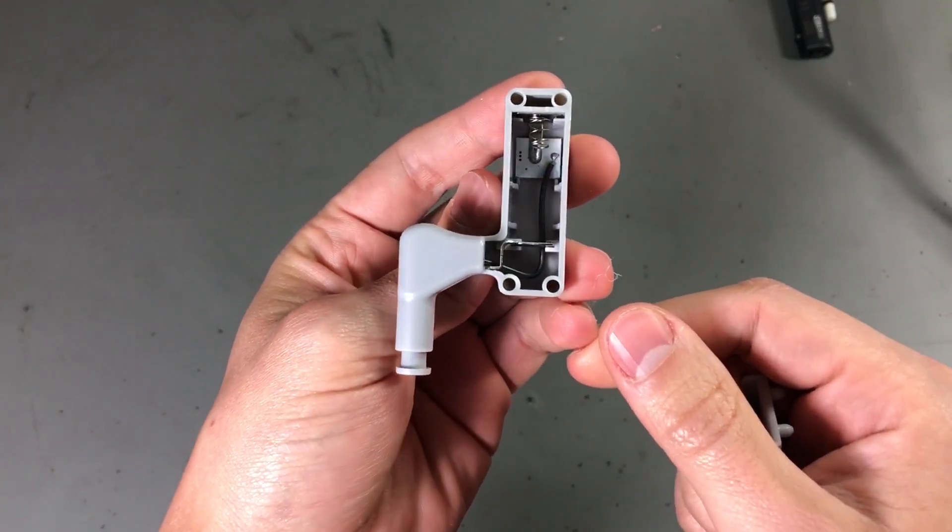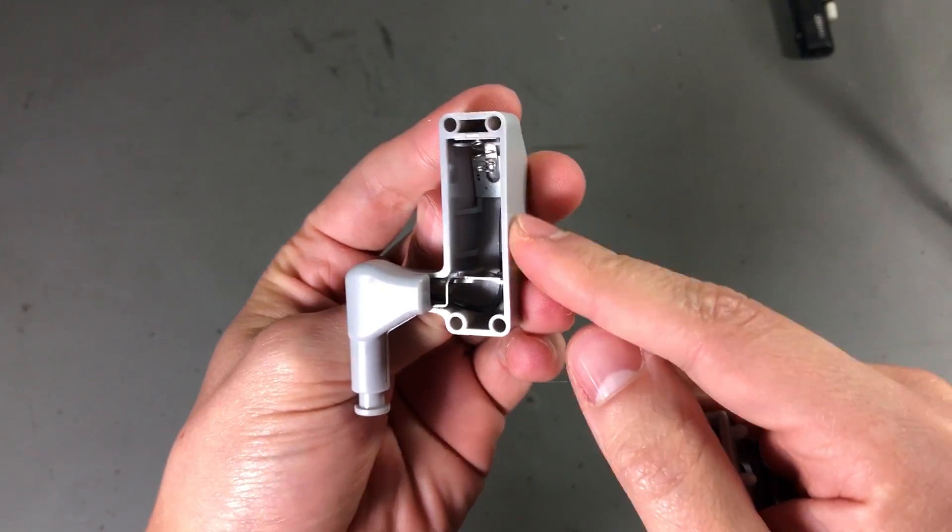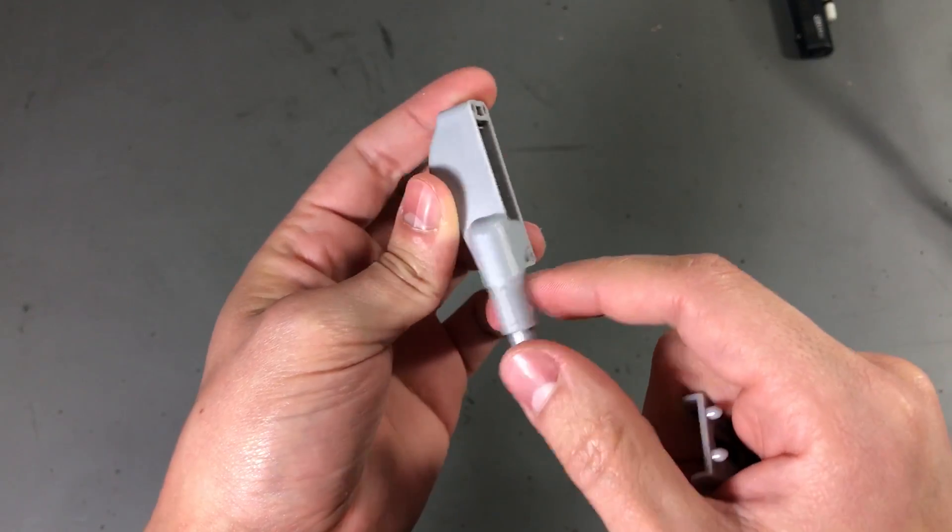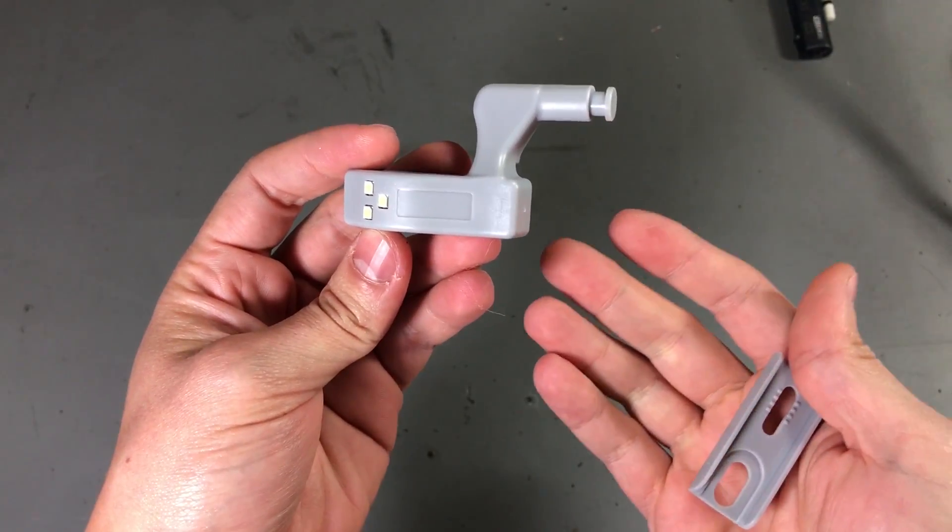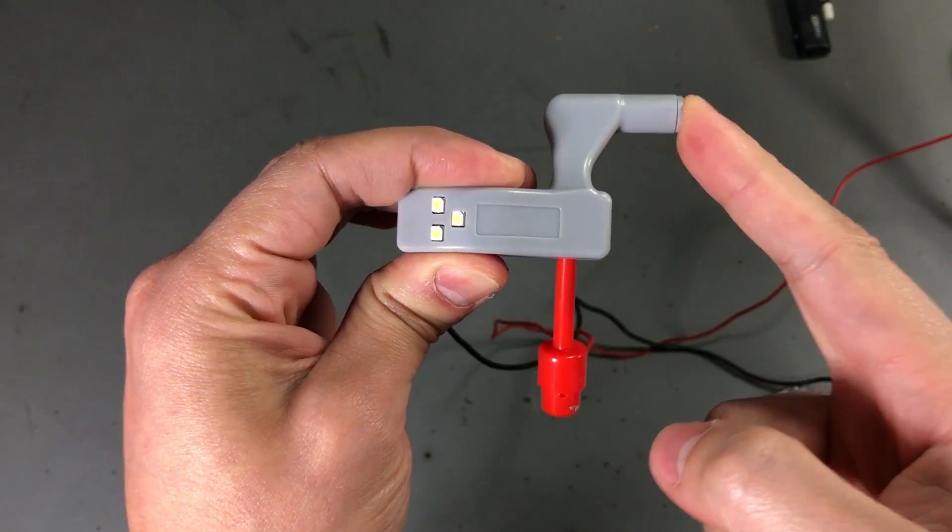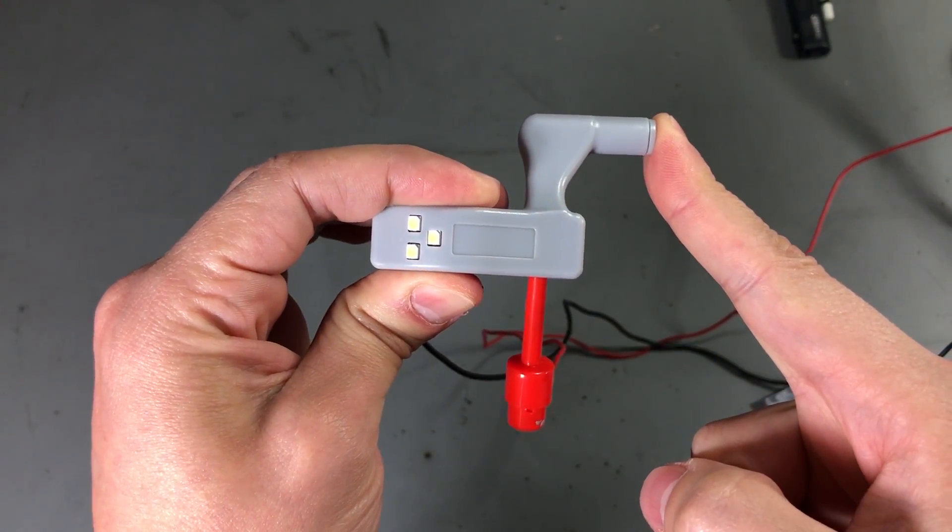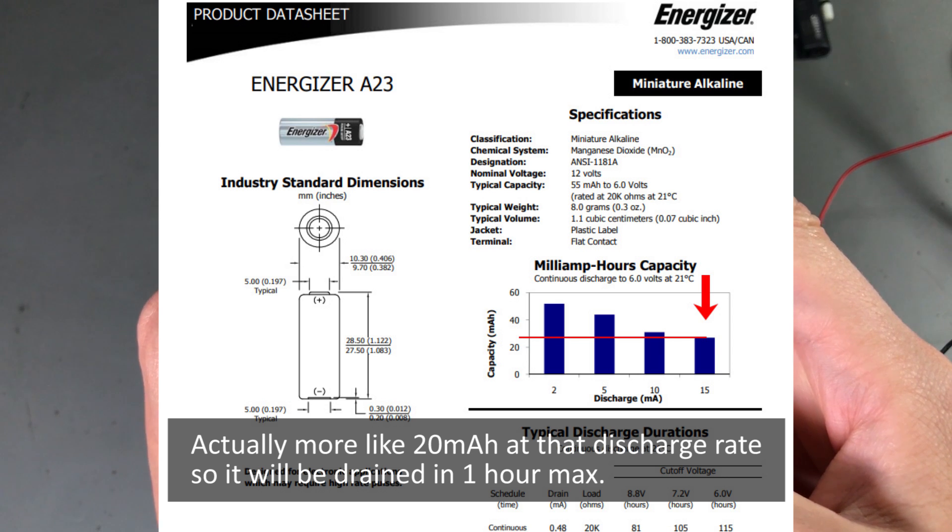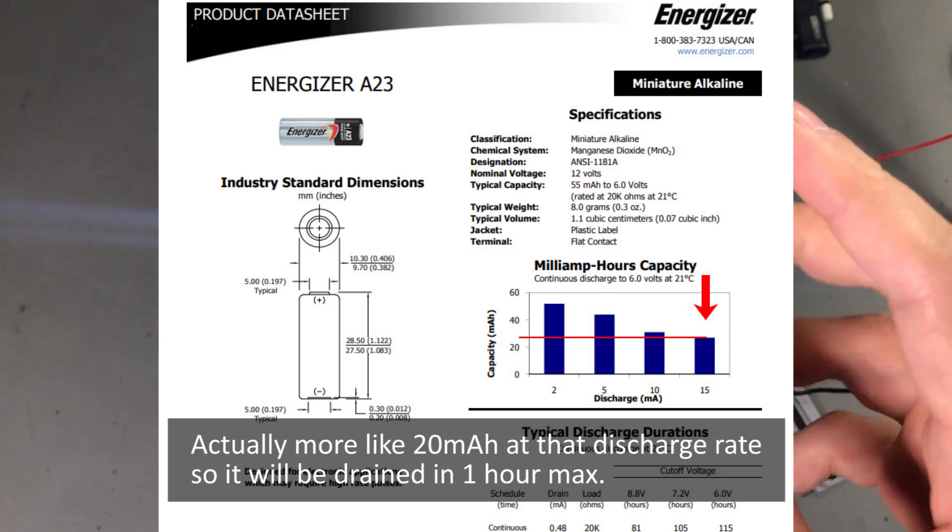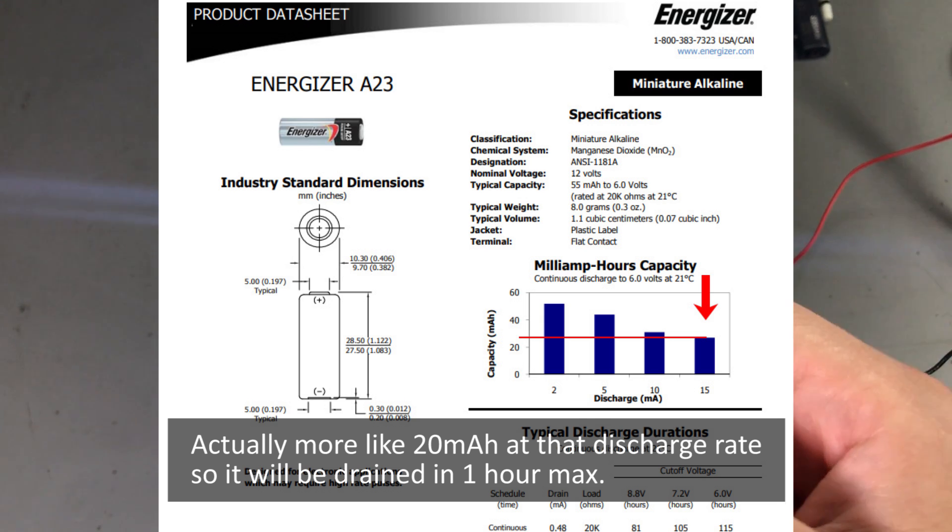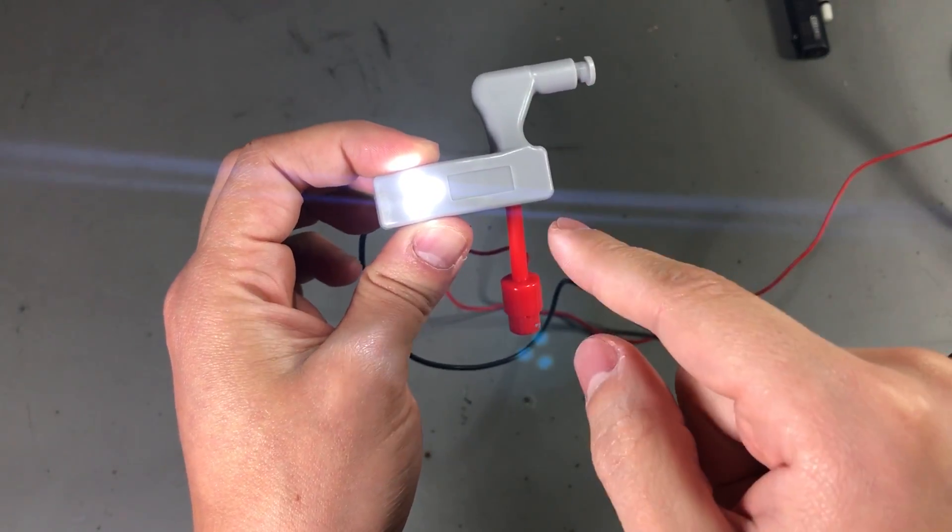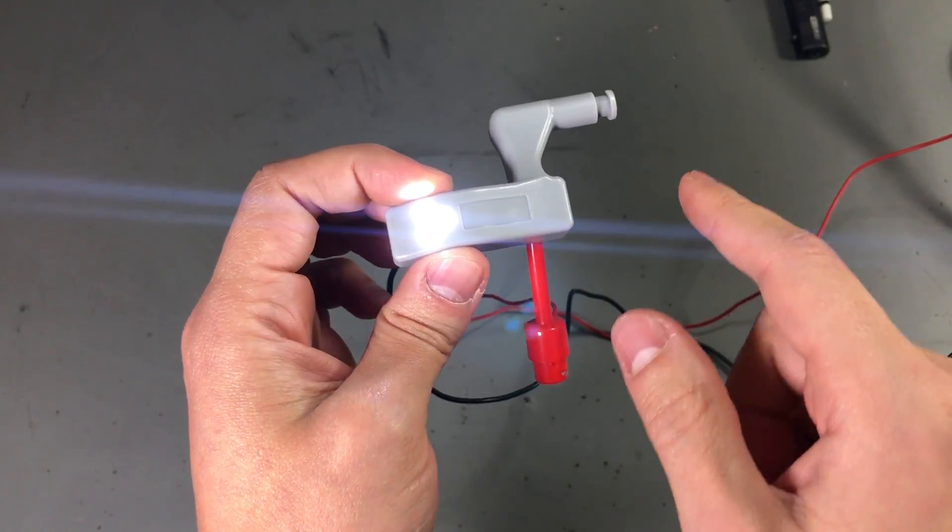But here's the problem with this design. It uses one of those 12 volts batteries, the A23 type. And those are not so common so people don't usually keep those around the house. And another drawback of this kind of circuit is that one of those batteries has about 50mA of capacity. And this thing pulls about 20mA which could mean just 2.5 hours of usage time out of one of those small batteries. So if you forget the door open the battery will be gone pretty fast.